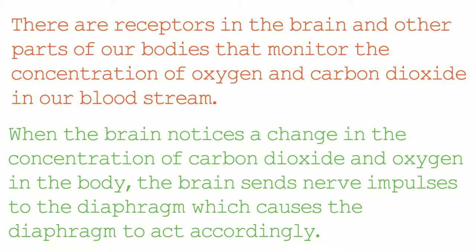An example of when the concentration of oxygen and carbon dioxide in the bloodstream changes would be when we exercise. When we exercise, the cells in our bodies, especially muscle cells, are using a greater quantity of oxygen for respiration compared to when they are at rest. Also, as more respiration reactions are taking place, more carbon dioxide is going to be produced and enter into the bloodstream.